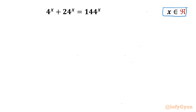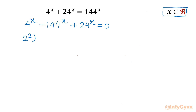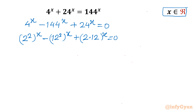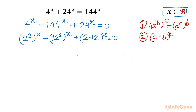Let us consider all the terms on one side first. So I will write 4^x - 144^x + 24^x = 0. Now we can write 4 as (2²)^x, 144 as (12²)^x, and 24 we can factorize as (2 × 12)^x. Now I will write two powerful exponent properties: Property 1 — (a^b)^c can be written as (a^c)^b. Property 2 — (a × b)^x = a^x × b^x.